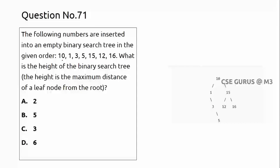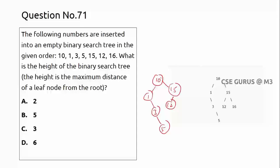We start from 10. 1 is less than 10, so it goes to the left side. 3 is less than 10 but greater than 1. 5 is less than 10, greater than 1, greater than 3. 15 is greater than 10, directly to the right. 12 is greater than 10, to the right but less than 15. 16 is greater than 10 and greater than 15, so right-right side. That's how the tree is constructed.